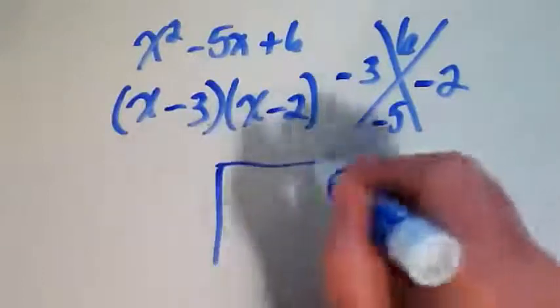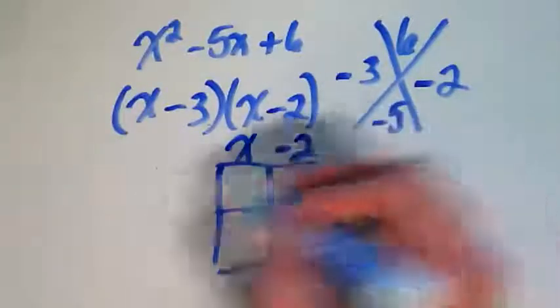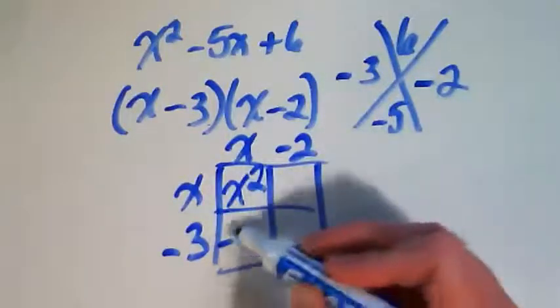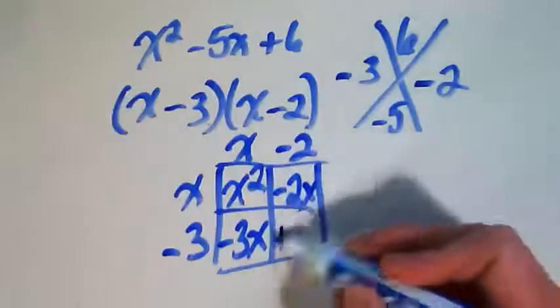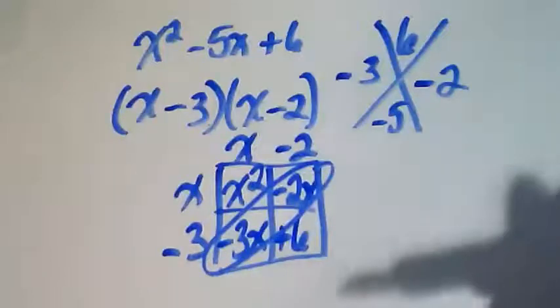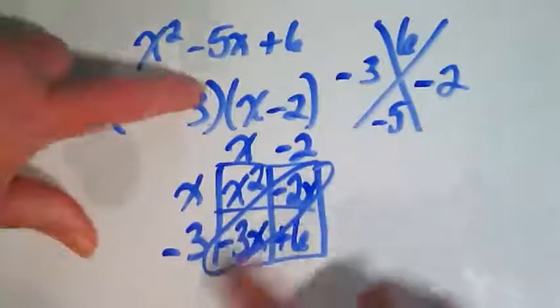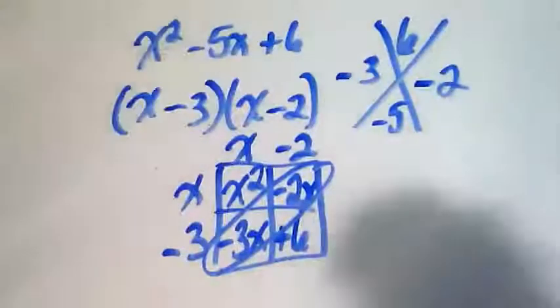Negative three plus negative two gives me negative five. Negative three times negative two gives me positive six. Let's check that with our box. X squared, negative three X, negative two X, positive six. My like terms here equal negative five. So I'm checking. This term is this one. This combined is this one. And there's that one.